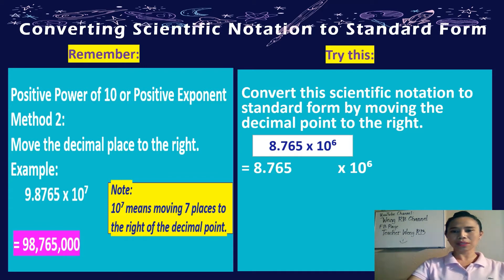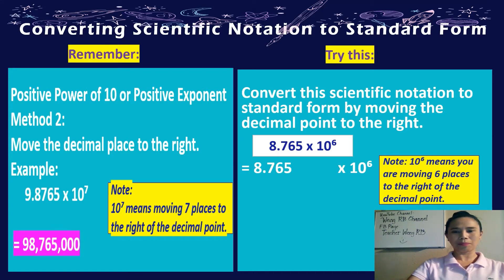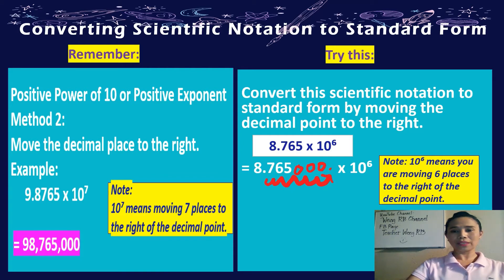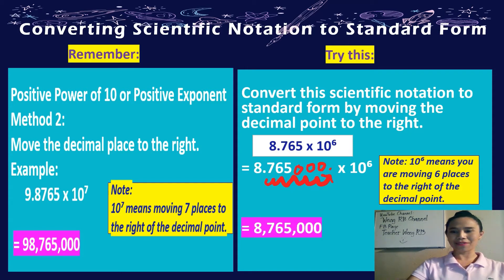Go along with me — we have to move 6 places to the right of the decimal point: 1, 2, 3, 4, 5, 6. We have to add more zeros. Since we don't have any more numbers after 5, we just add 3 more zeros and put the decimal point at the end. So our final answer would be 8,765,000. Did you get that? Perfect.